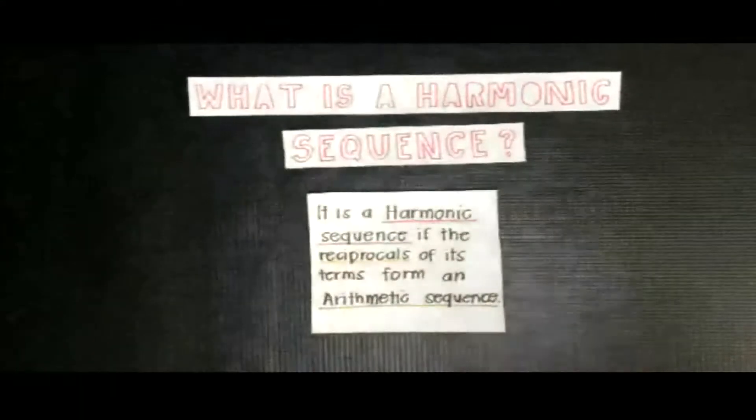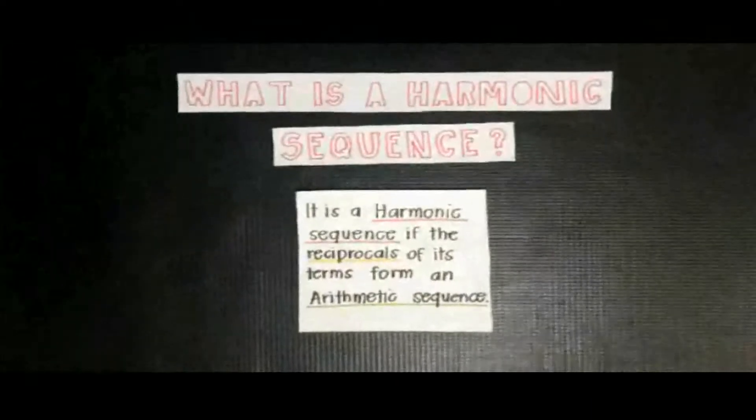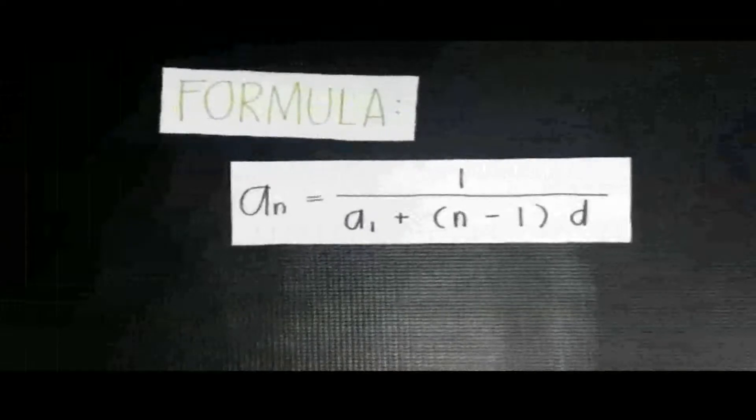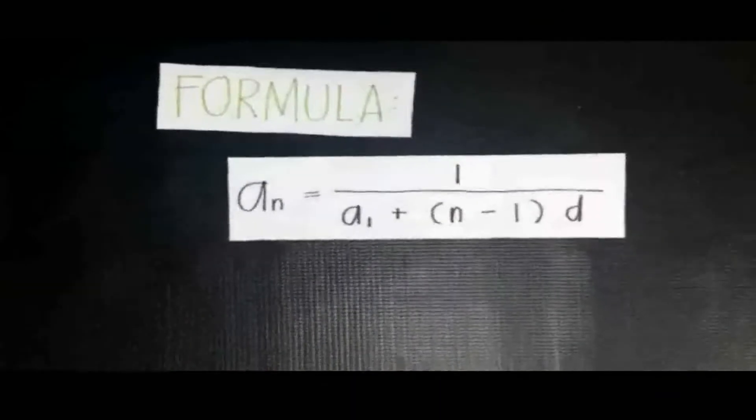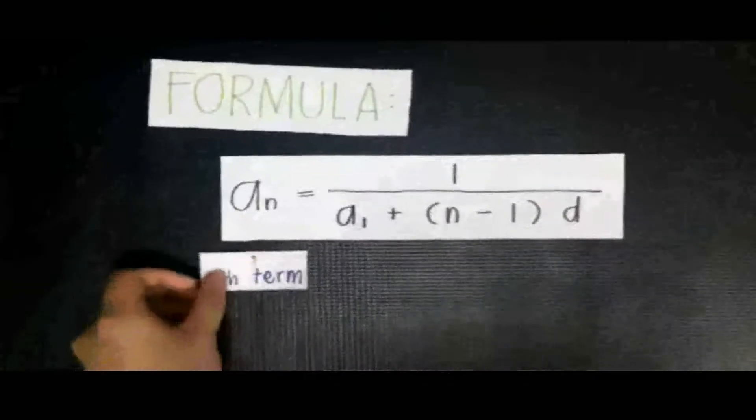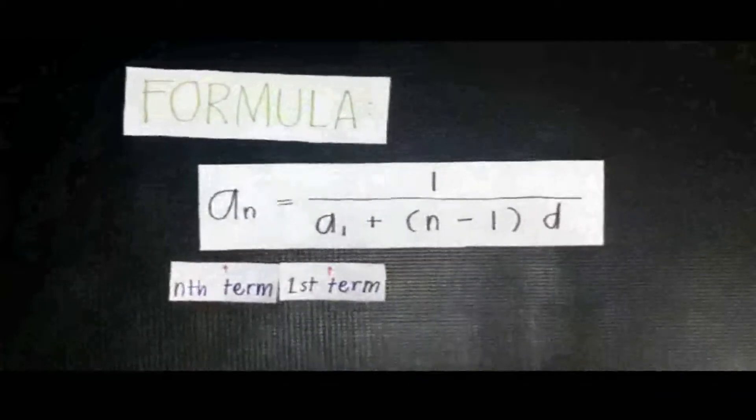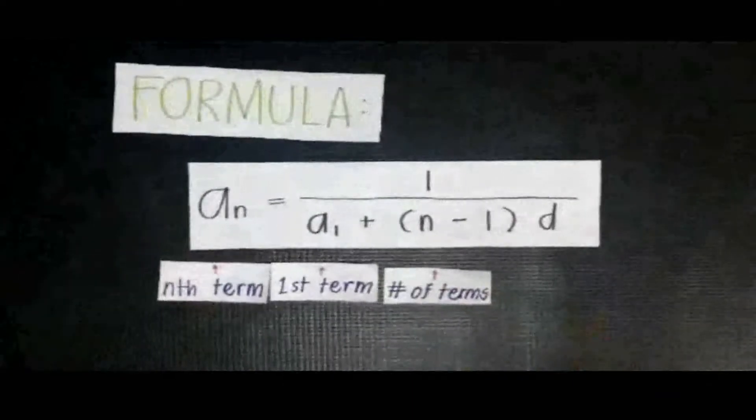Harmonic Sequence: It is a harmonic sequence if the reciprocals of its terms form an arithmetic sequence. Here is the formula: a_n equals 1 over a_1 plus the quantity of n minus 1 times d. Where a_n is the nth term, a_1 is the first term, n is the number of terms, and d is the common difference.